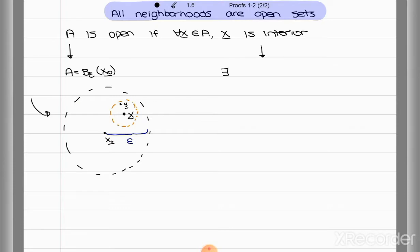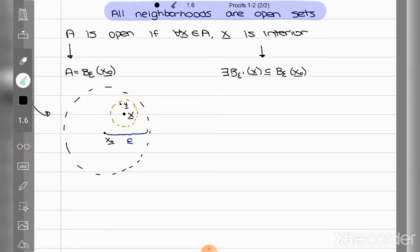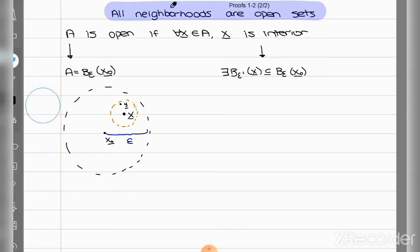Basically, we can say that there exists a neighborhood with a smaller radius, which we can call epsilon-dash, around the new point x-vector, which is contained in the set. And the set is the original neighborhood. So think of the original neighborhood as the actual set, and then you take a neighborhood within that.